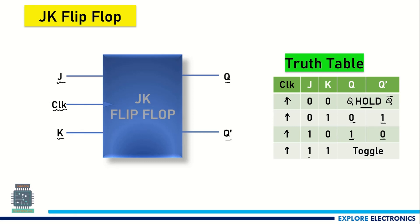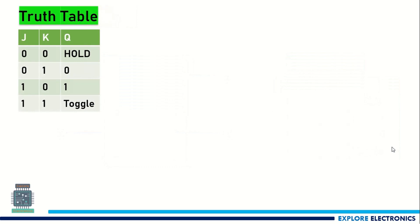When J and K both are 1, the output will toggle — meaning if Q is equal to 0, it will be toggled to Q-bar state, and Q-bar will be toggled to Q state. This is how the truth table of JK flip-flop is.